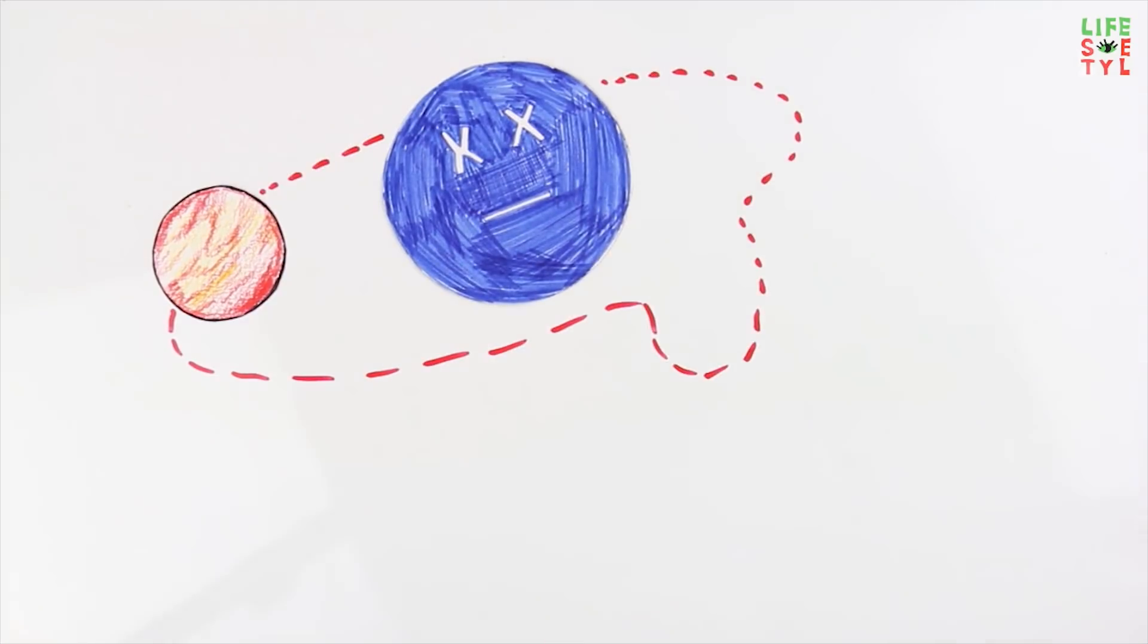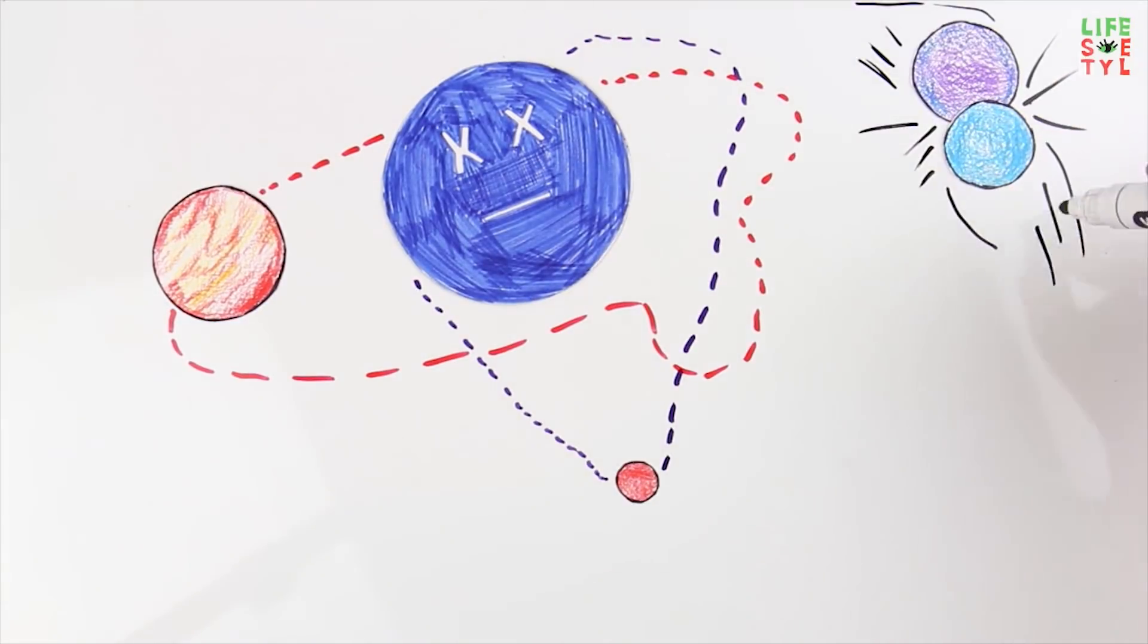A dead sun can no longer retain planets with its gravity. As a result they leave their orbits and scatter randomly in outer space.